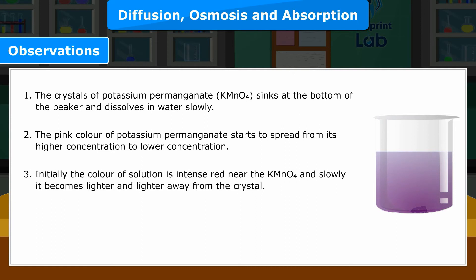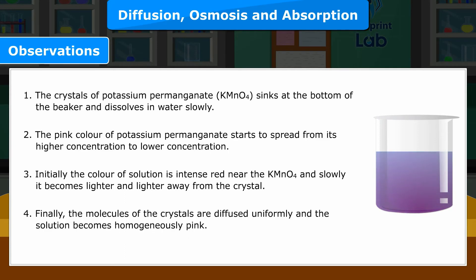3. Initially, the color of the solution is intense red near the KMnO4 and slowly it becomes lighter and lighter away from the crystal. 4. Finally, the molecules of the crystals are diffused uniformly and the solution becomes homogeneously pink.